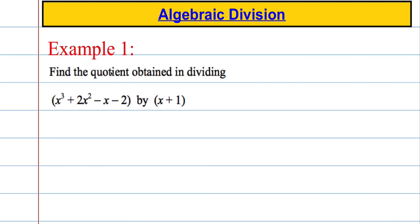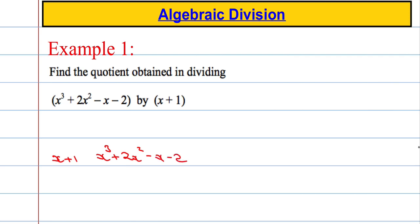I'm asked to find the quotient obtained in dividing x cubed plus 2x squared minus x minus 2 by x plus 1. So let's set up the problem. I'm going to be dividing by x plus 1 into x cubed plus 2x squared minus x minus 2.